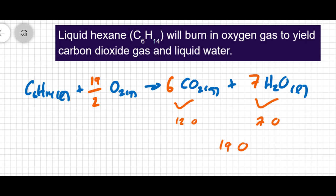So what we're going to do is we're going to double everything. And in doubling everything, I'm going to get two C6H14 liquid, plus 19 O2 as a gas, going to 12 CO2 as a gas, and 14 H2Os as a liquid.